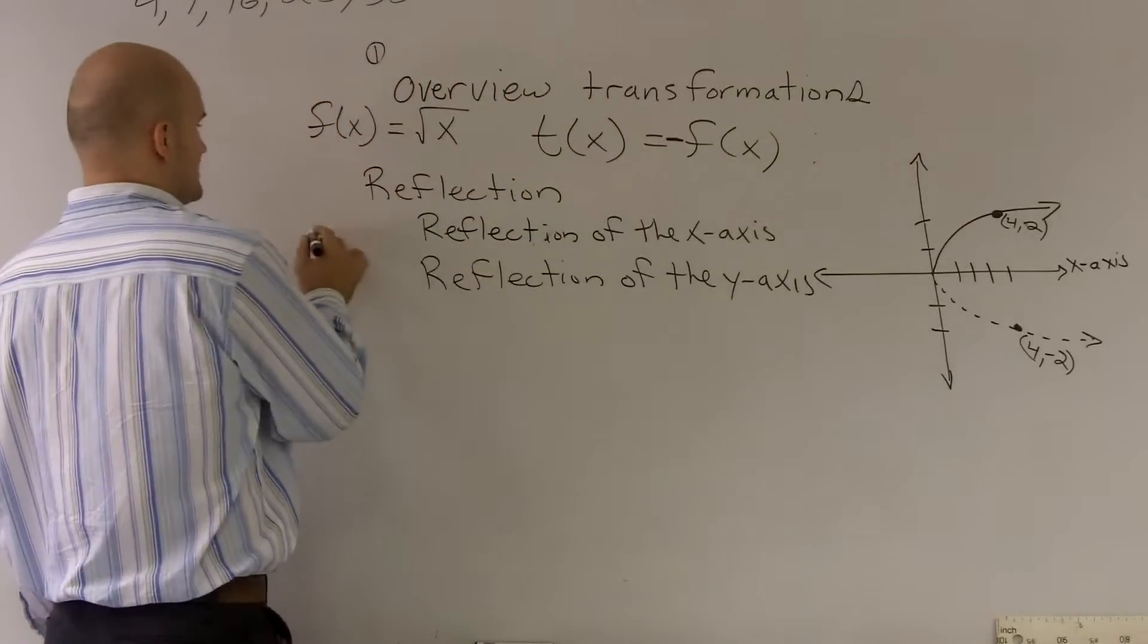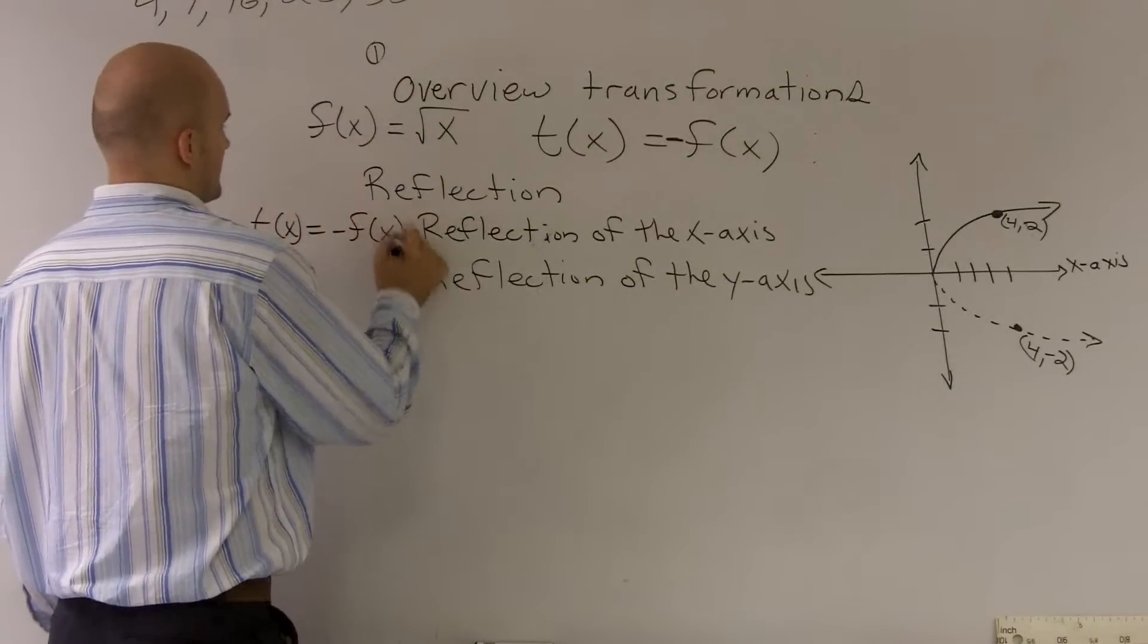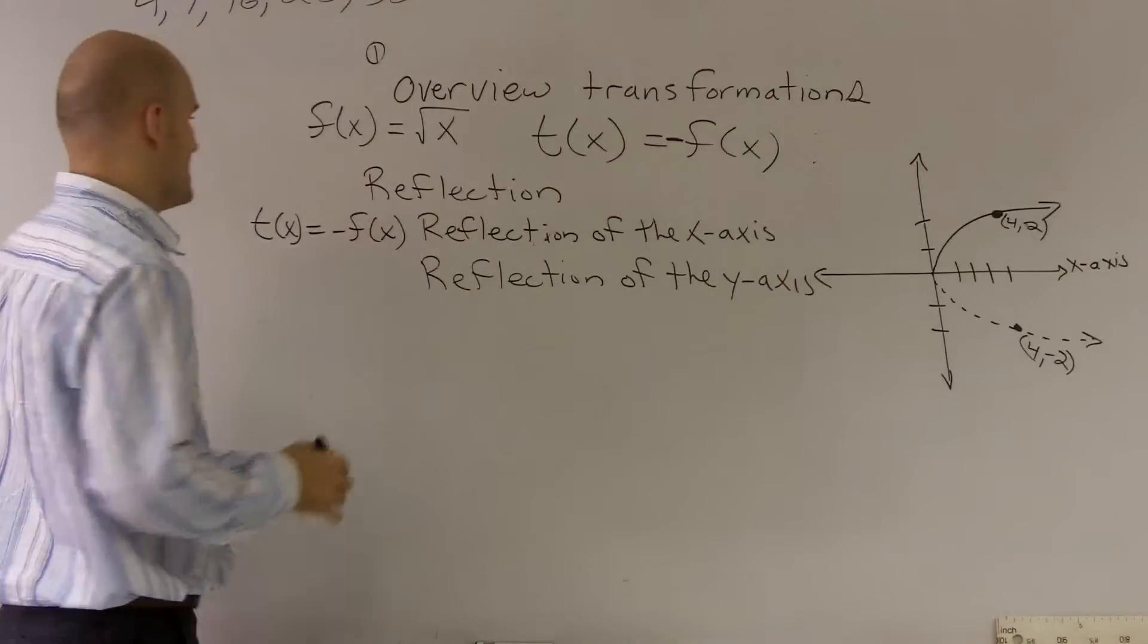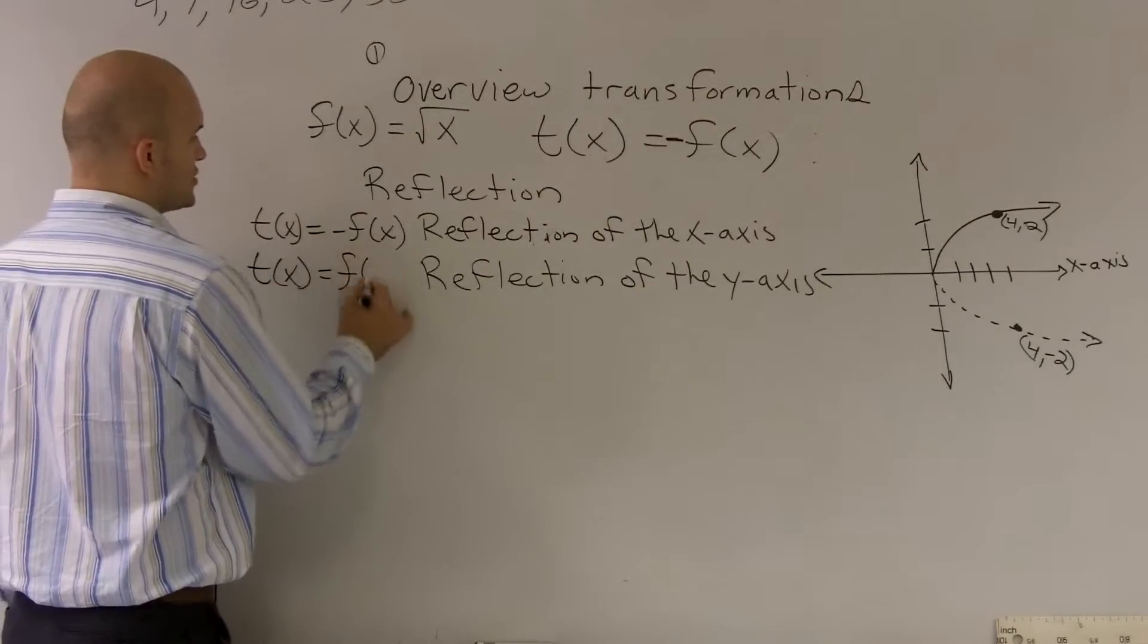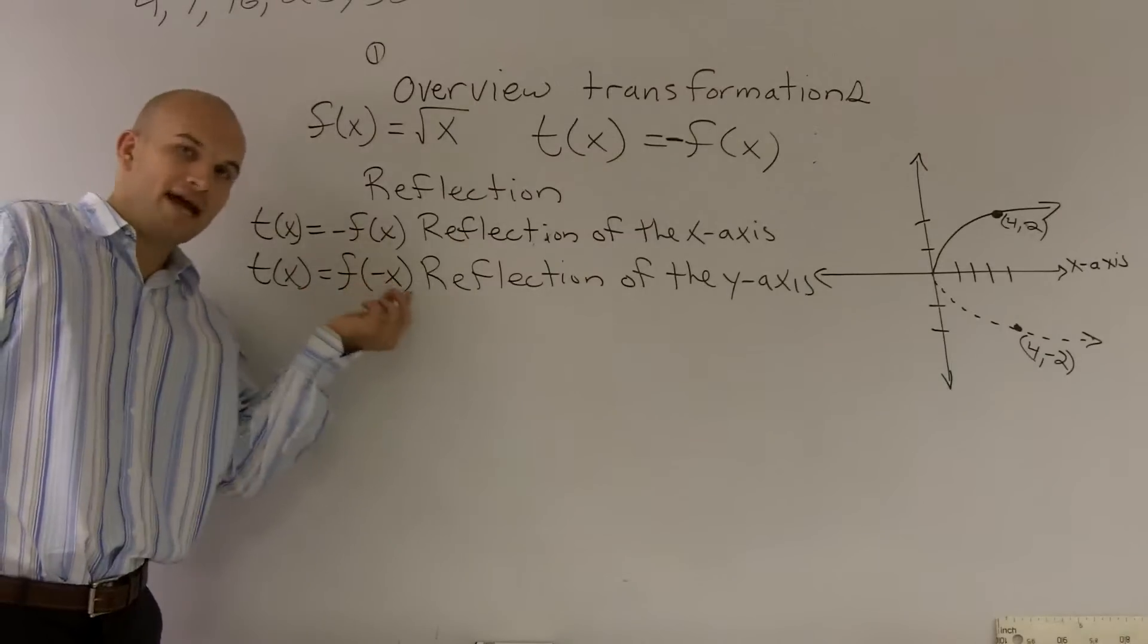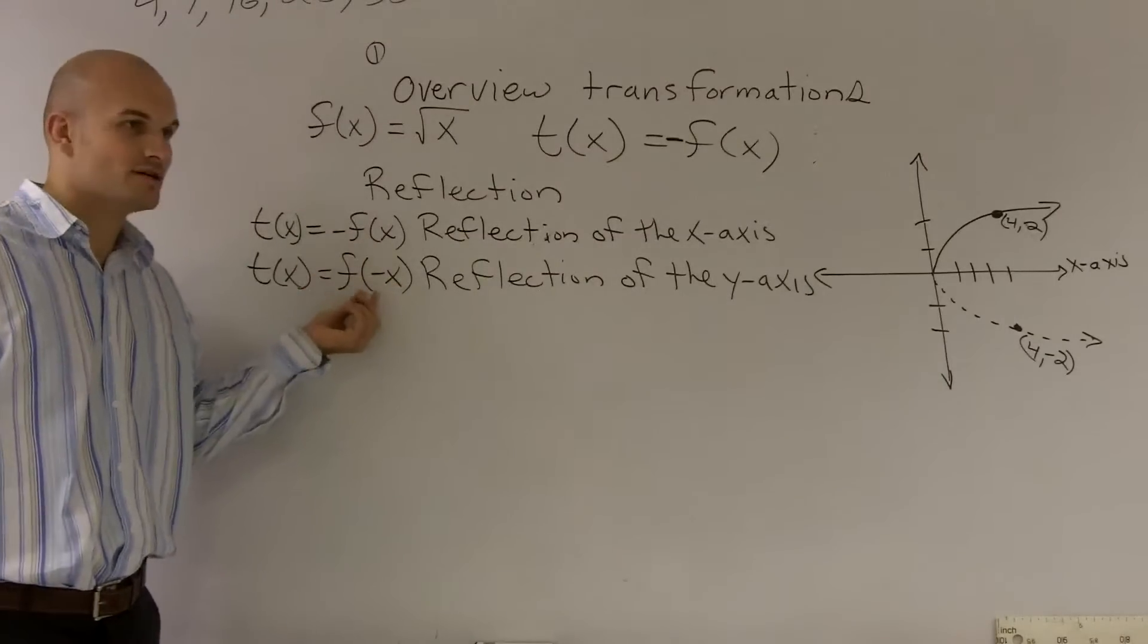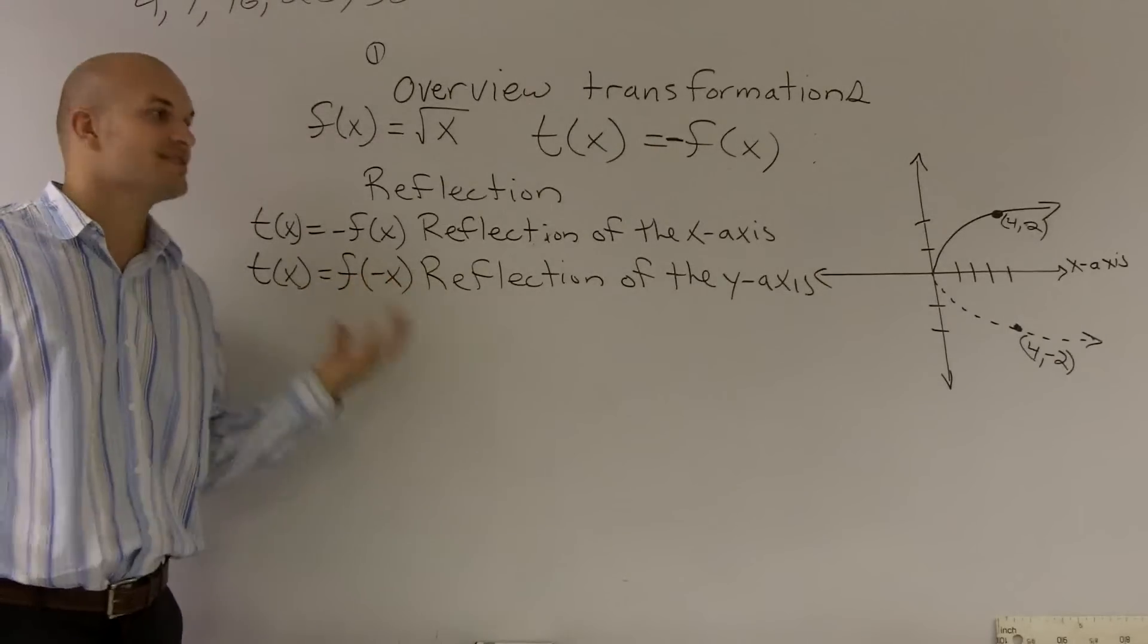So this is when you have t of x equals negative f of x. And it's a reflection of the y axis when we have our transformation is equal to our function of a negative x. Notice there's a difference. Here, we have our negative inside of the function. So it's actually changing our x values now.